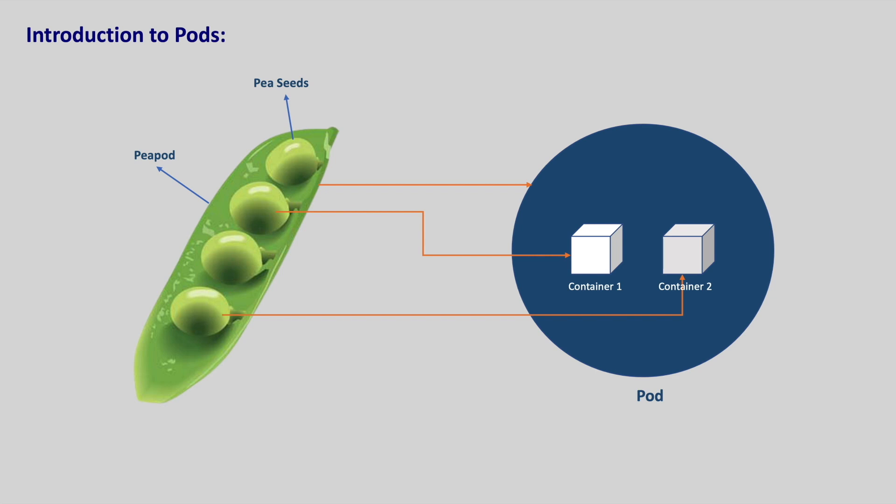The Kubernetes pod is an encapsulated layer for our containers. A pod can have one or more containers. When we want to run our application, we will run it in the containers just like we did in Docker, but in Kubernetes the container alone cannot be deployed - it needs to be wrapped up in a pod.